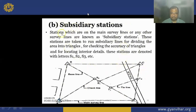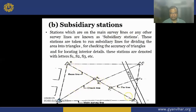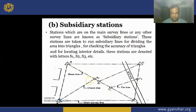Subsidiary stations: the stations which are on the main survey lines or any other survey lines are known as subsidiary stations, represented by S1 and S2. These join the main survey line — also called the baseline — with the vertices of the triangles or the main survey stations. S1 is drawn from main survey station C onto the baseline, and S2 from station A onto the baseline, to divide the entire plot into triangles or trapezoids.